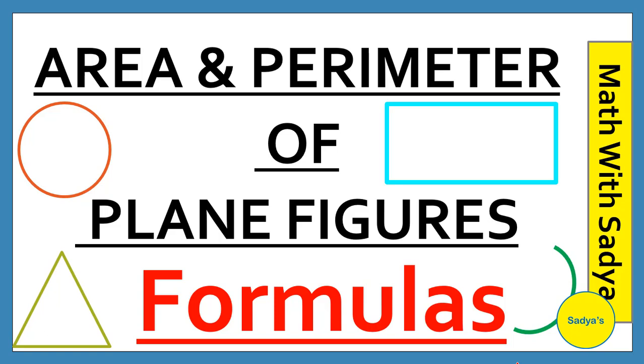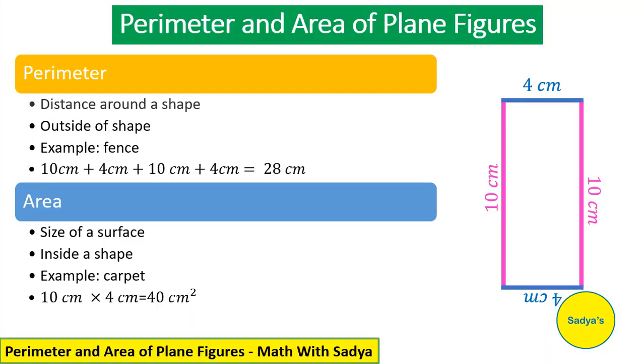So let's first understand what actually area and perimeter is and what do we mean by plane figures. Perimeter is the distance around a shape. It is outside of shape.